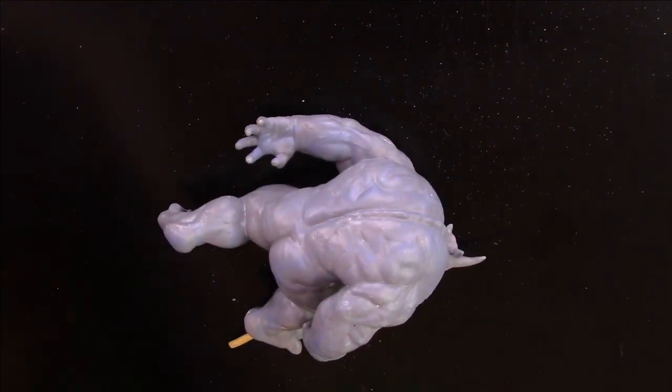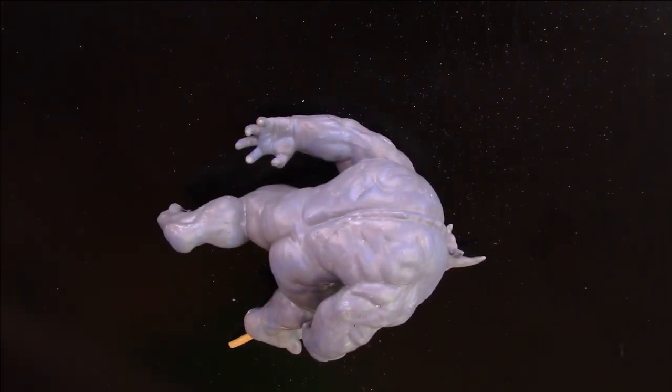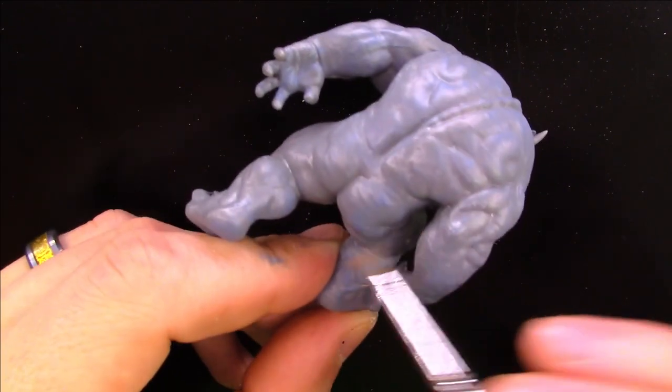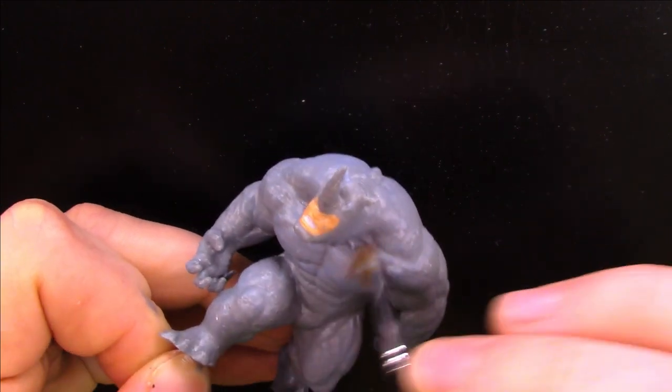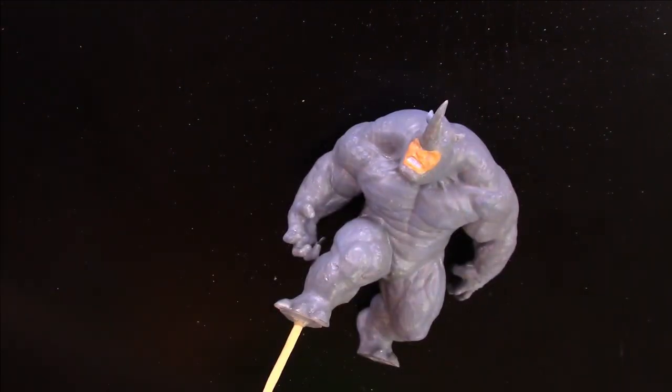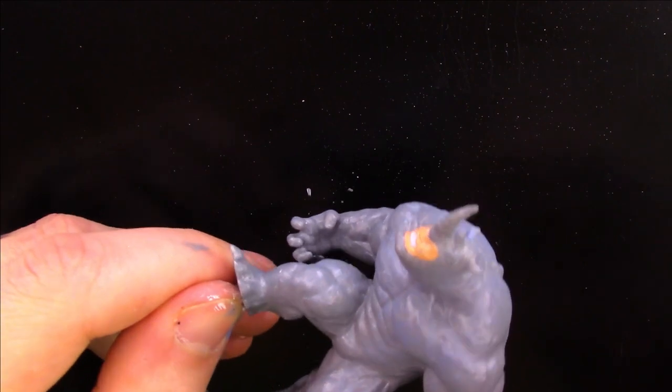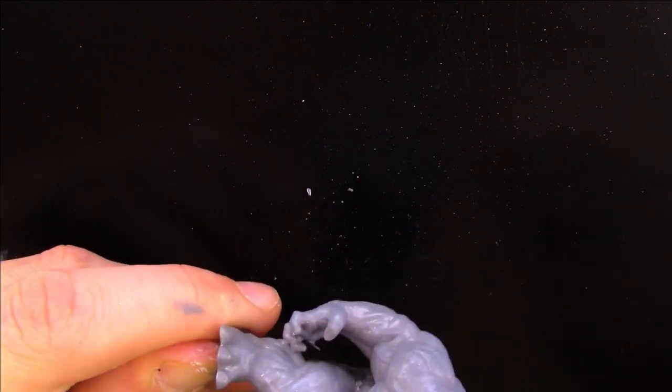For the next dry brushing colors I go a little more selective. I decide that the light will shine from his top right down so I focus a little more on the dry brushing areas that would have the most light on them. I proceed to use an even lighter gray called Gorgon Hide, then a skeleton bone and finally a pure white.